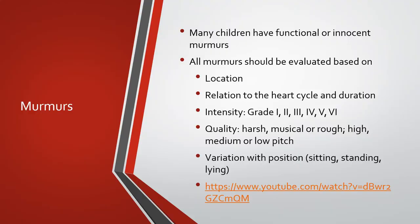Many children have functional or innocent murmurs, and all murmurs need to be evaluated based on location, relation to the heart cycle, and duration. Grade one is very soft and hard to hear. Grade two is soft but easier to hear. Grade three is loud without a thrill. Grade four is loud with a pre-cordial thrill. Grade five is loud with a thrill, audible with a stethoscope partially off the chest. Grade six is very loud, audible with a stethoscope or the naked ear. We want to note the quality and variation with positional changes.